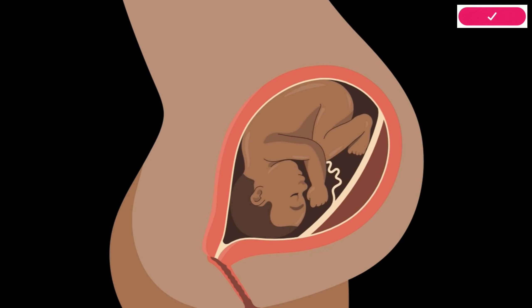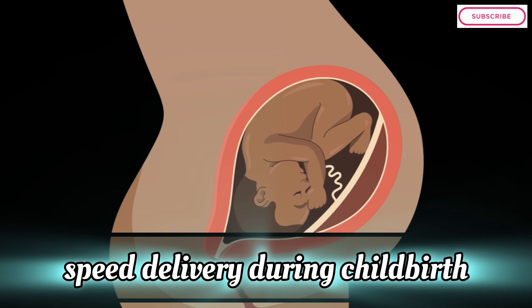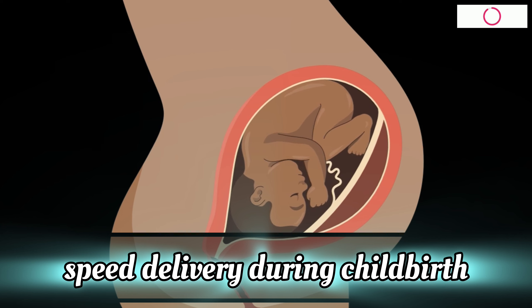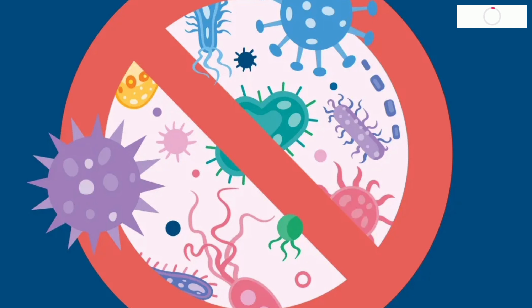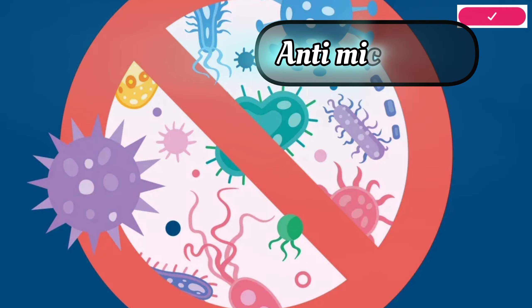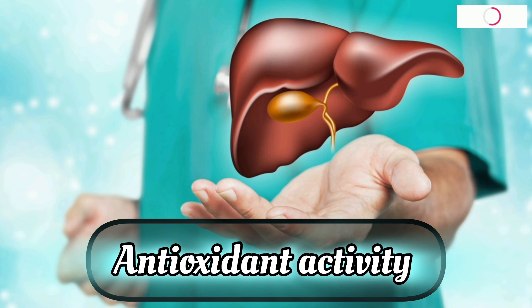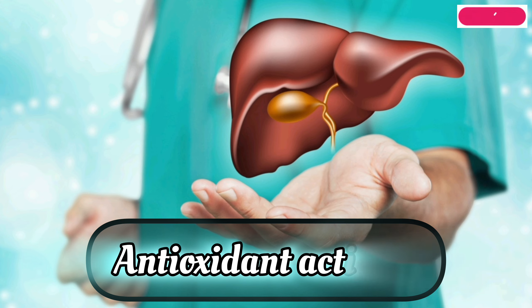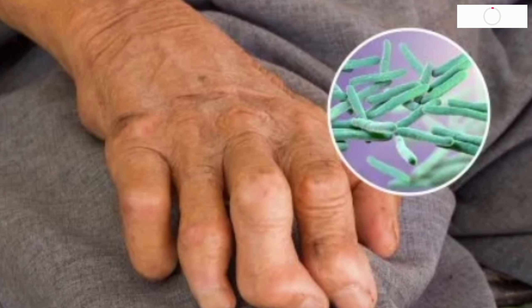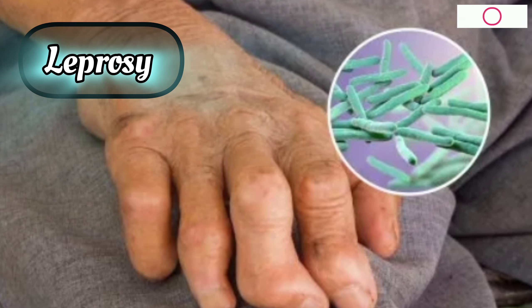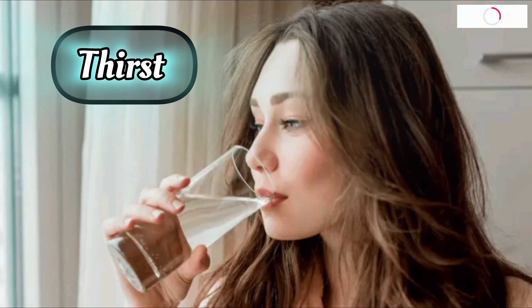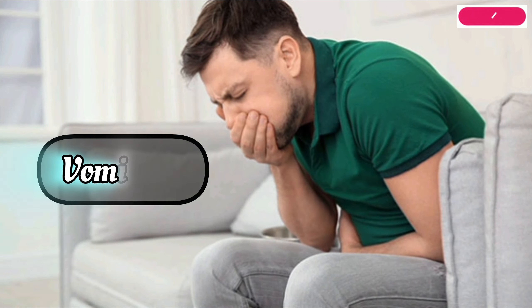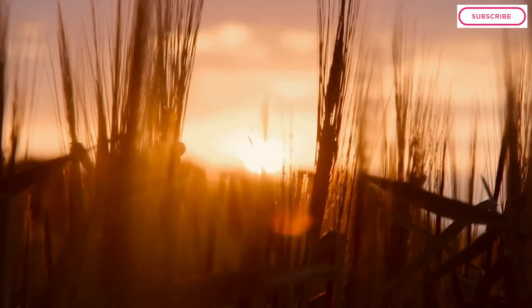Vasaka has the property of speeding delivery during childbirth. It exhibits various pharmacological activities such as antimicrobial, hepatoprotective, and antioxidant activity. It is also used to treat leprosy, blood disorders, heart troubles, thirst, and vomiting.